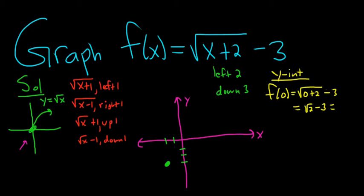I'm going to use a calculator. Square root of 2 minus 3 is roughly negative 1.6. So that would be our y-intercept, maybe right here. Somewhere between negative 1 and negative 2. Not a very good picture, but that's okay.